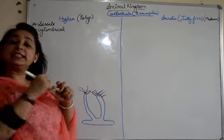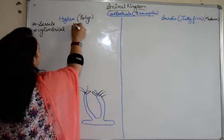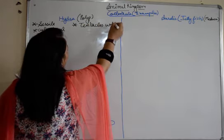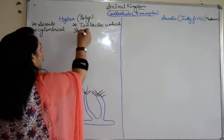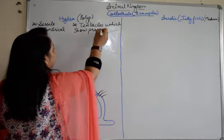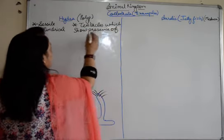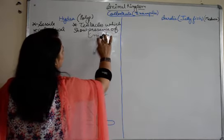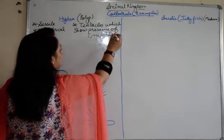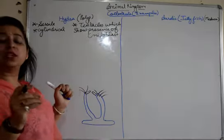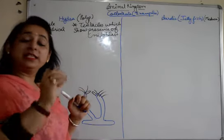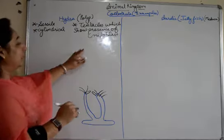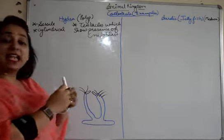It is sessile, cylindrical, plus it has tentacles which show presence of nidoblasts, the stinging cells which are present on the tentacles, which we have discussed in our last video also, the characteristic feature of cnidarians, and we have discussed its structure as well.